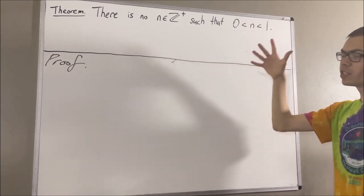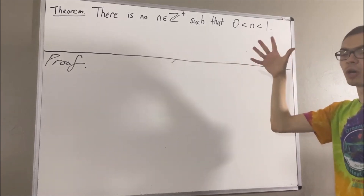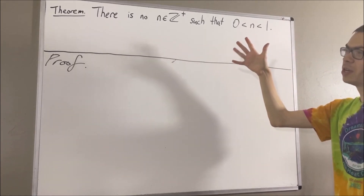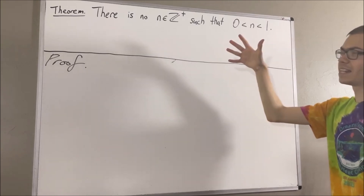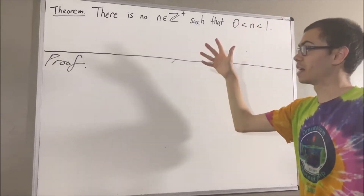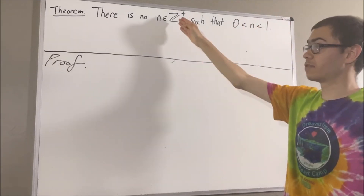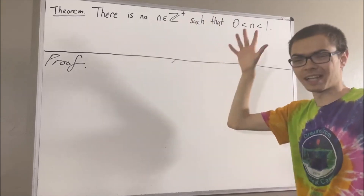Now, in proving this theorem, we are going to use the well-ordering principle, which, if you recall, states that every non-empty subset of the positive integers has a smallest element.